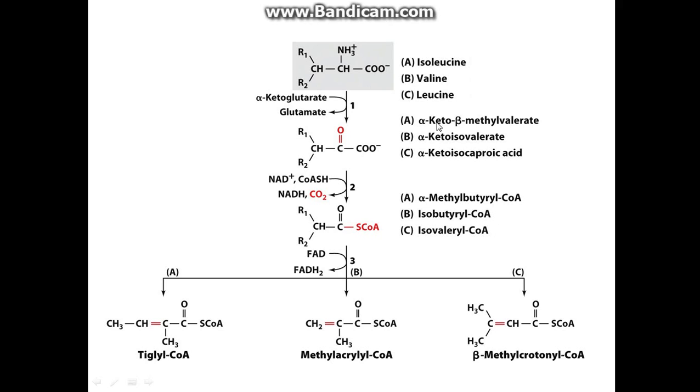So you end up with alpha-keto-beta-methylvalerate from isoleucine, alpha-ketoisovalerate from valine, and alpha-ketoisocaproate from leucine. Then you're going to see alpha-methylbutyryl-CoA, isobutyryl-CoA, and isovaleryl-CoA.